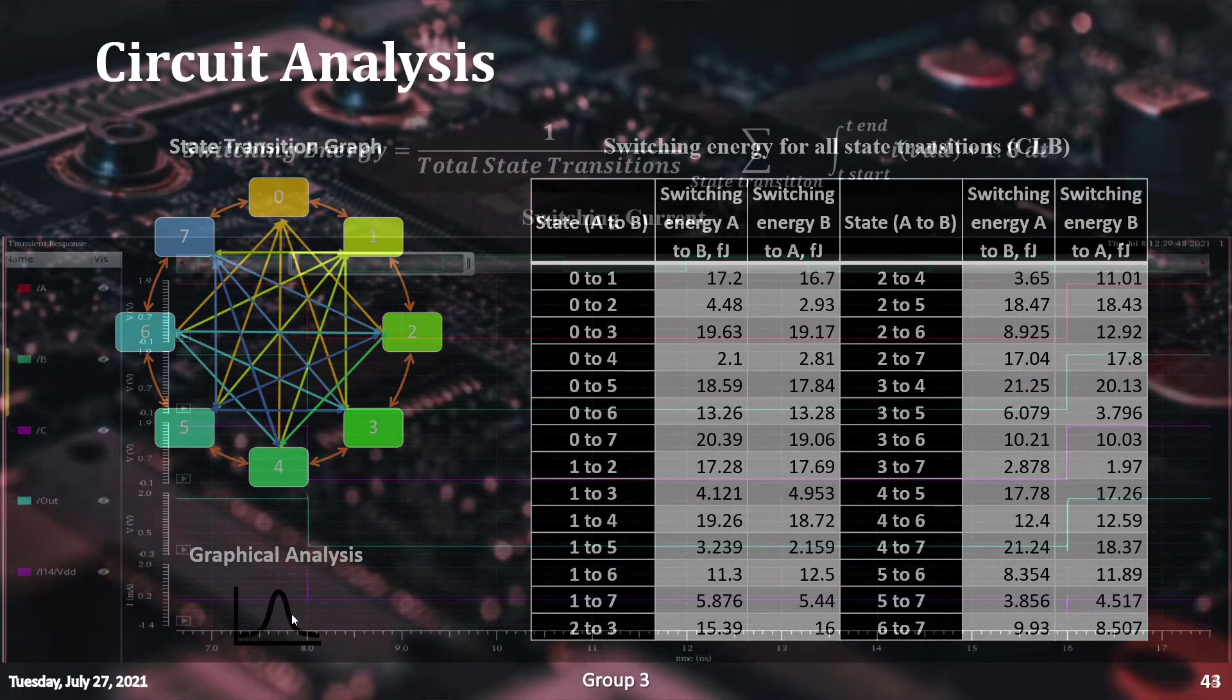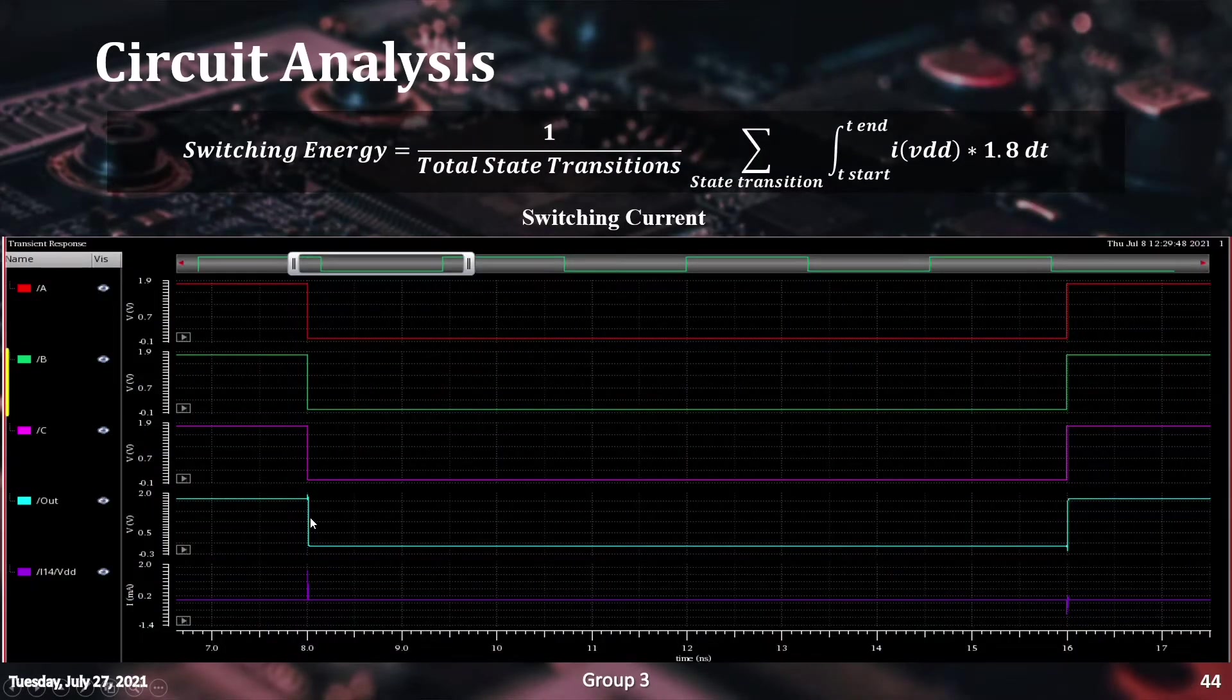From the graph, we can see that the current spike is occurring during a state transition, and the corresponding energy loss is calculated by integrating this value with respect to time. These values are not taken at the maximum operating frequency as in that case, it's difficult to find the difference between stable and transitioning voltage values.